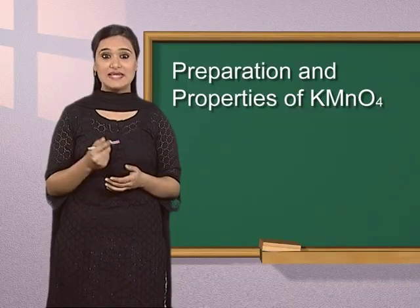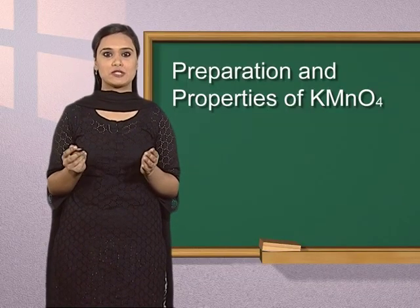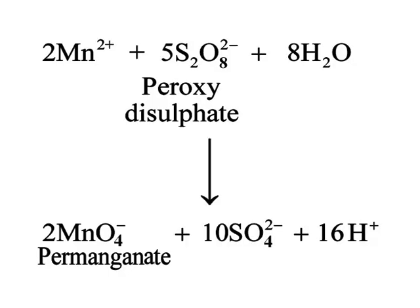Now let us discuss the laboratory preparation of potassium permanganate. In the laboratory method, potassium permanganate is prepared by the oxidation of a manganese ion salt by peroxydisulfate. The ionic reactions involved in this method are shown on screen.